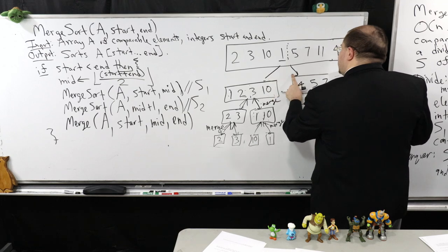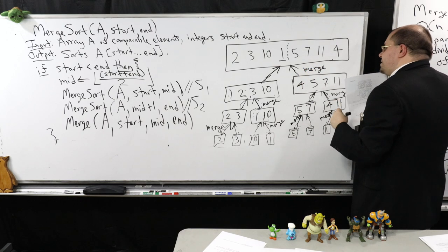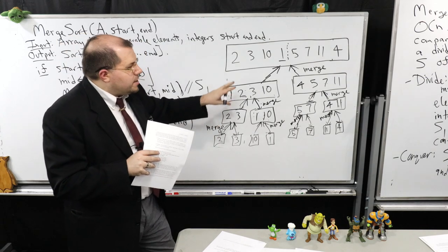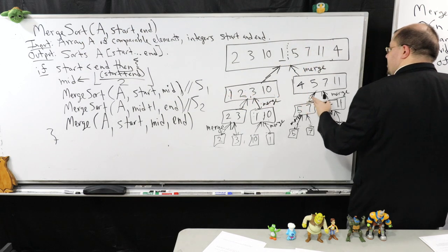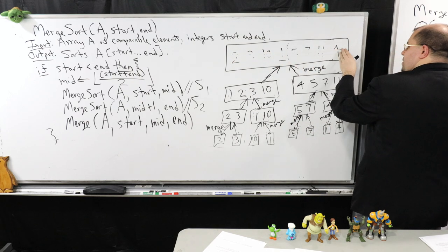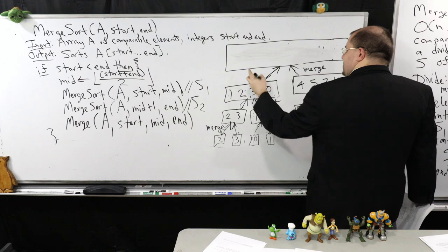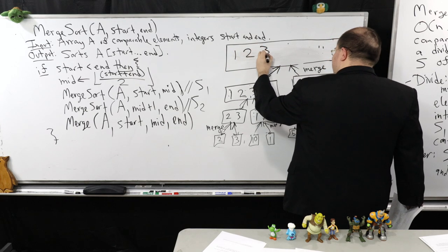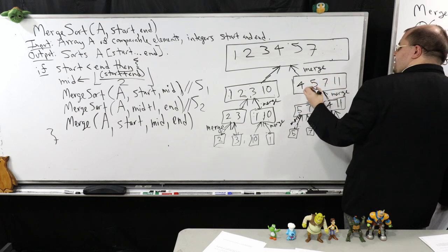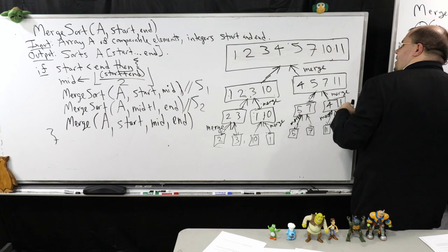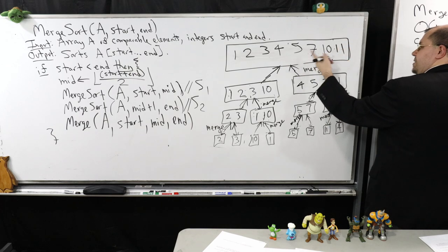Now that both halves are complete, we do the final merge operation over the entire array. I take S1 (1, 2, 3, 10) and S2 (4, 5, 7, 11) and apply merge — going through the process with my fingers: 1, 2, 3, 4, 5, 7, 10, and 11. The whole array is sorted and we're done. This is the completion of Merge Sort — I've sorted the original array A. That's an example execution of Merge Sort.